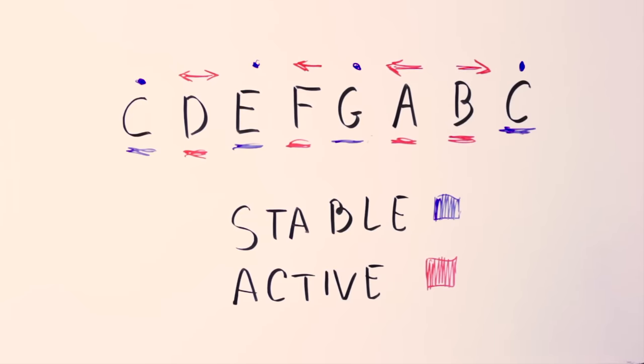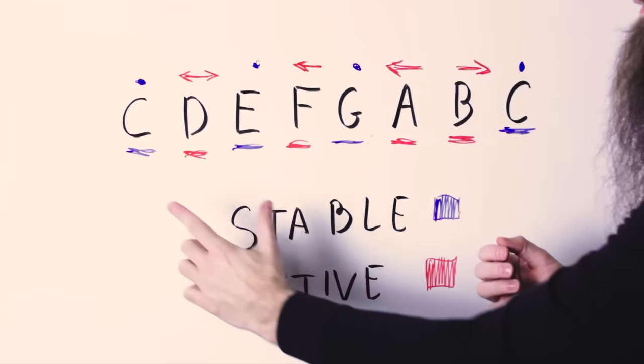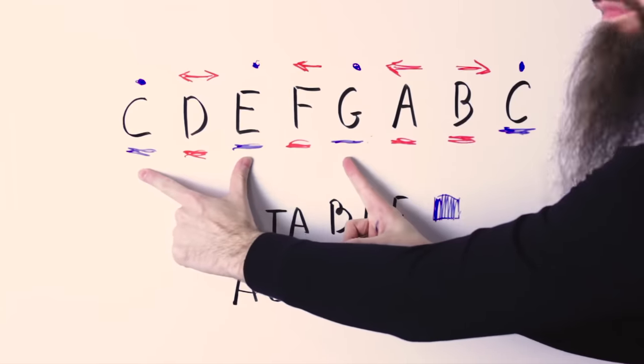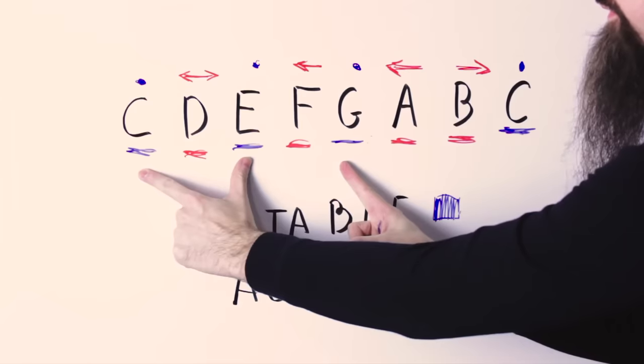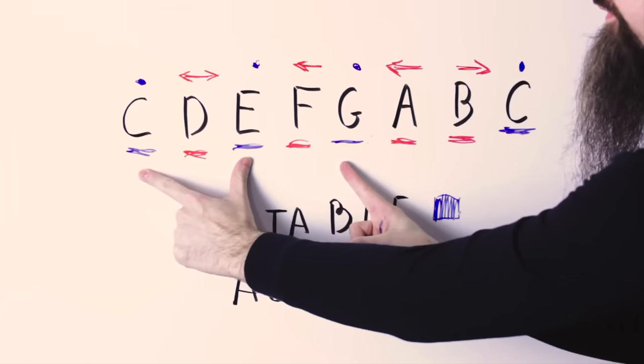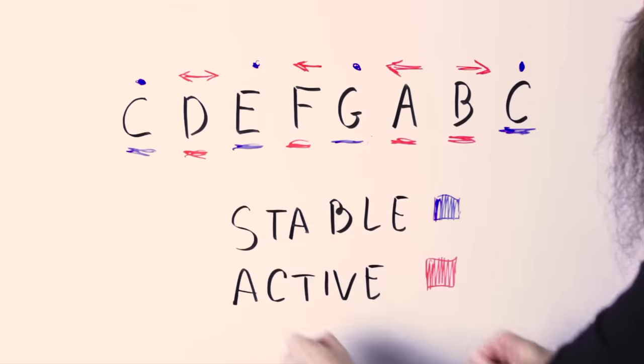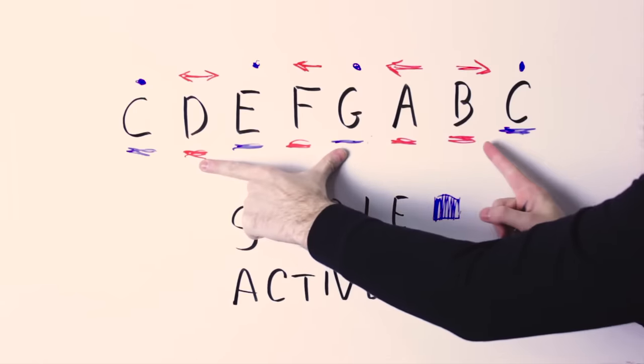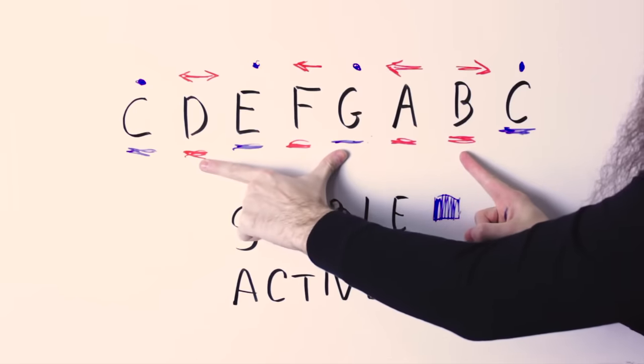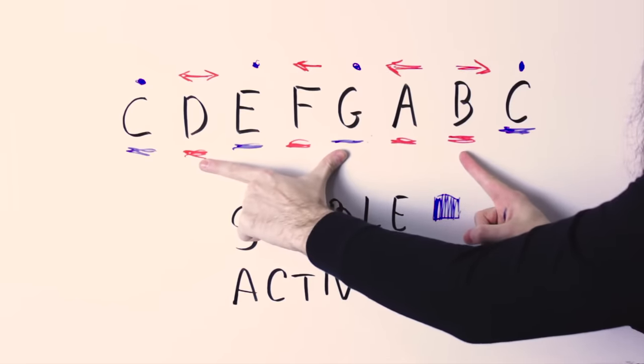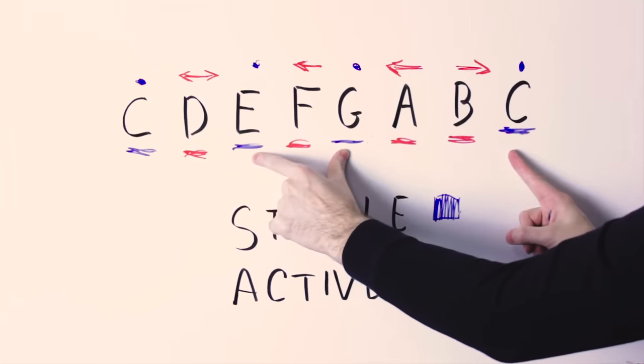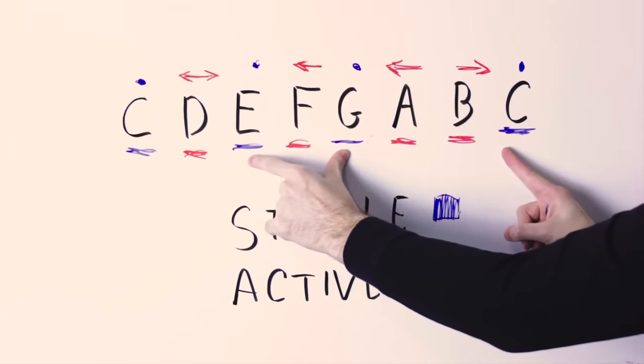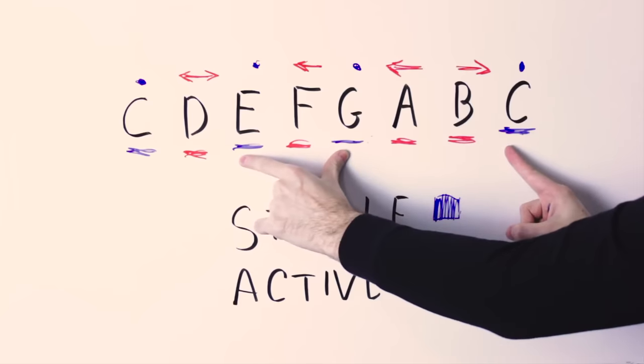Now when you take into account those tendency to move of those notes, you'll see that the first chord of the key, C major, made by the notes C, E and G, is perfectly stable because it's made only by stable notes. But for instance, the fifth chord of the key, G major, that is made by the notes G, B and D, wants to resolve because it contains those B and D notes that want to resolve into the C and E notes respectively.